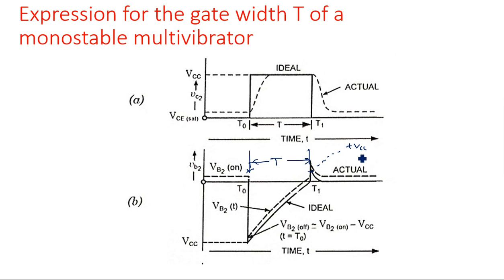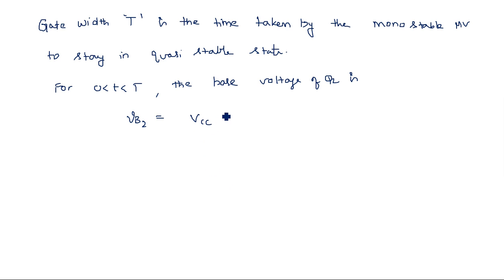V_final is VCC, and V_initial — previously it was VCC across the collector, but now the VCC voltage has dropped to VCC minus i1 times R1. So the expression becomes: VCC minus (VCC minus V_initial) times e to the power of minus t by tau, where V_initial is VCC minus i1·R1.